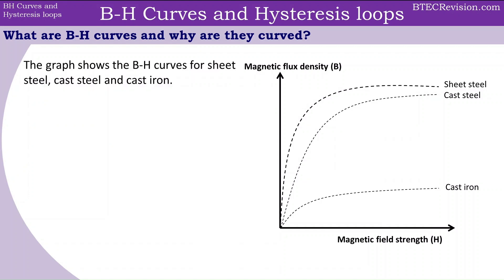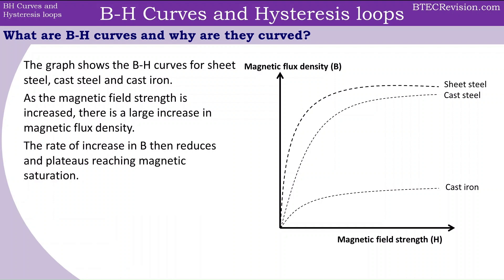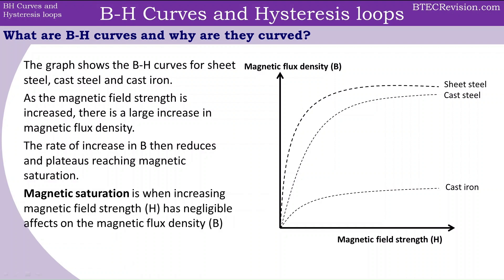Here on the right side we have the graph showing the BH curve for three materials: sheet steel, cast steel, and cast iron. Looking at the patterns shown in the graph, we can see that as the magnetic field strength increases, there is a large increase in the magnetic flux density. The rate of increase is then reduced and plateaus — it stabilizes and becomes horizontal — reaching something called magnetic saturation.